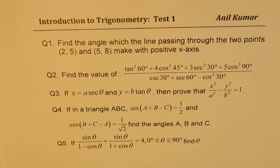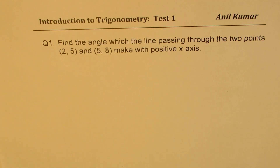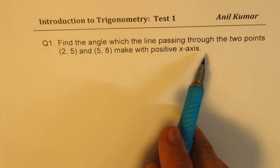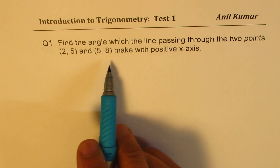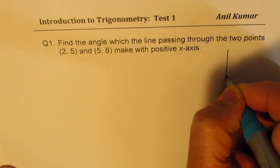I'll begin with question number one, which is to find the slope of the line. We'll also understand the concept behind it. The question is: find the angle which the line passing through two points makes with the positive x-axis.